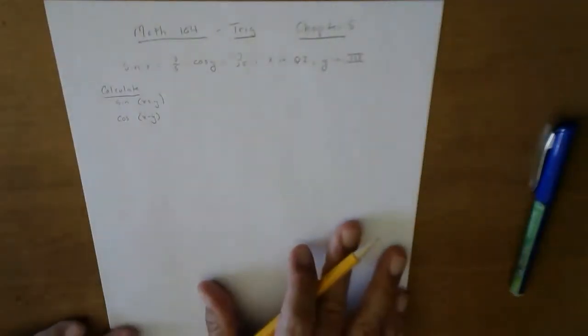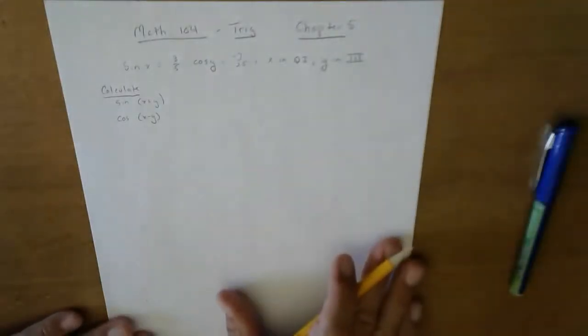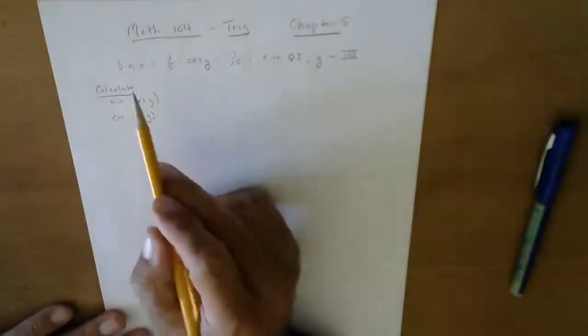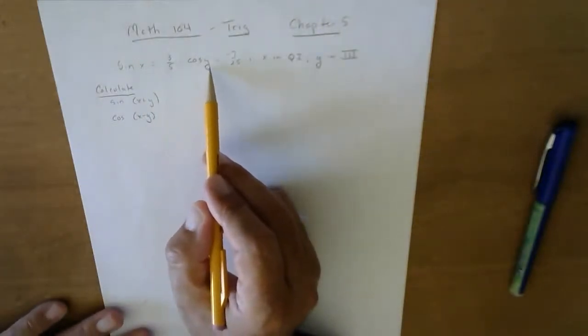Alright, so I'm going back to Chapter 5. I had a question by a student, so let's go through and see how to solve it. Sine of x equals three-fifths, cosine of y equals negative seven twenty-fifths. X is in quadrant one, y is in quadrant three.